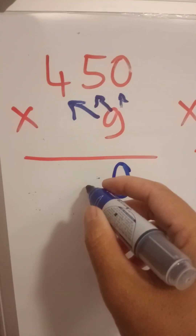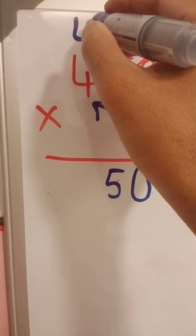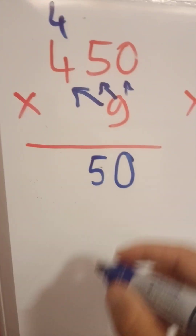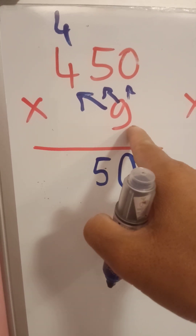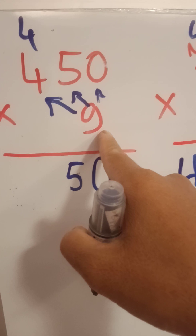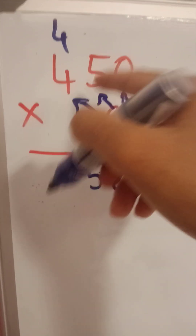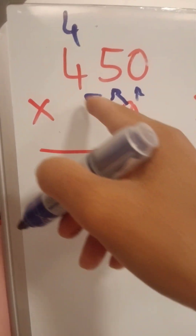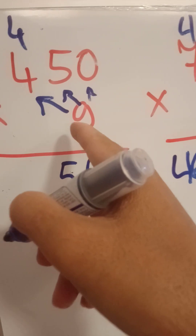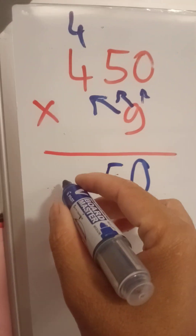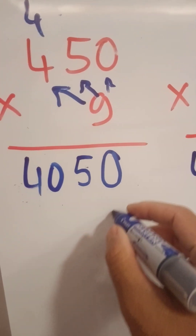Nine with five is 45 — drop five, keep four. And nine and four is 36, and 36 plus four is 40. So this answer is correct.